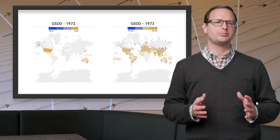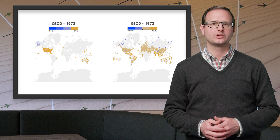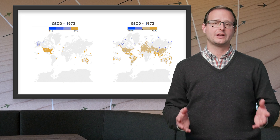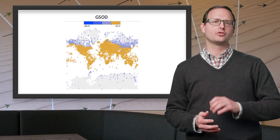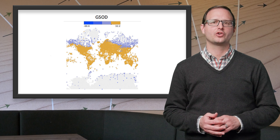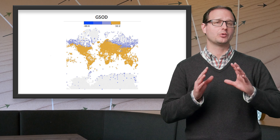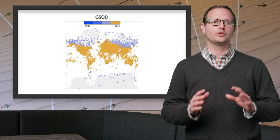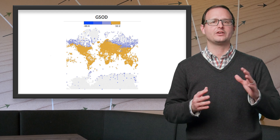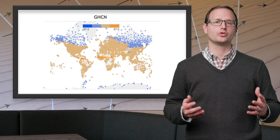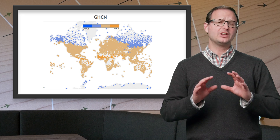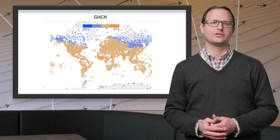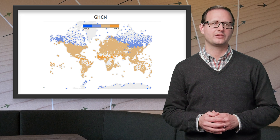This still only tells us part of the story. Global temperature isn't consistent — some places may have gotten warmer and others cooler. The distribution of reporting stations shows more stations in the most heavily populated latitudes. As a result, those regions will have a disproportionate influence on overall climate trends. To account for this, we break our analysis into smaller slices based on latitude bands.